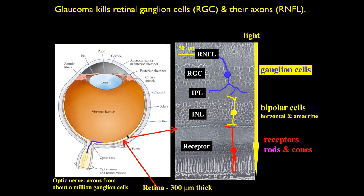Just a little review of things to make sure we're using the same terms. Glaucoma kills retinal ganglion cells and their axons. The regions affected are the interplexiform layer, where ganglion cells synapse onto the bipolars; the retinal ganglion cell layer, where the cell bodies are; and the retinal nerve fiber layer, which contains the axons from the ganglion cells, as well as blood vessels and glial cells. These are the three regions affected.